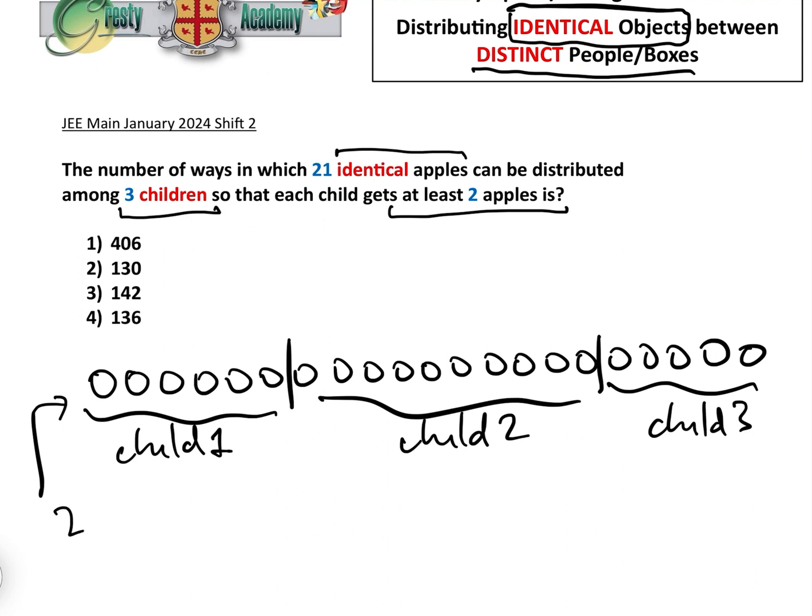Now here we have 23 things, namely 21 apples and two bars. And if we were to permutate all of those, and remember at the moment we're not answering this question, we're assuming that this at least two apples doesn't apply.